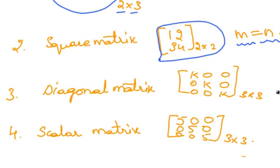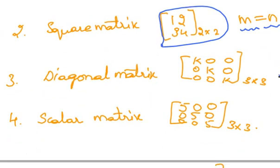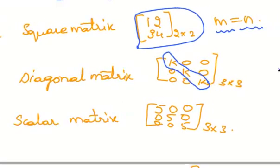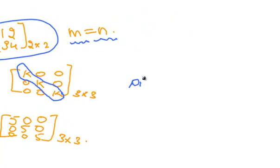A diagonal matrix — a square matrix in which all elements except the diagonal elements are 0 is known as a diagonal matrix. This is a diagonal matrix.